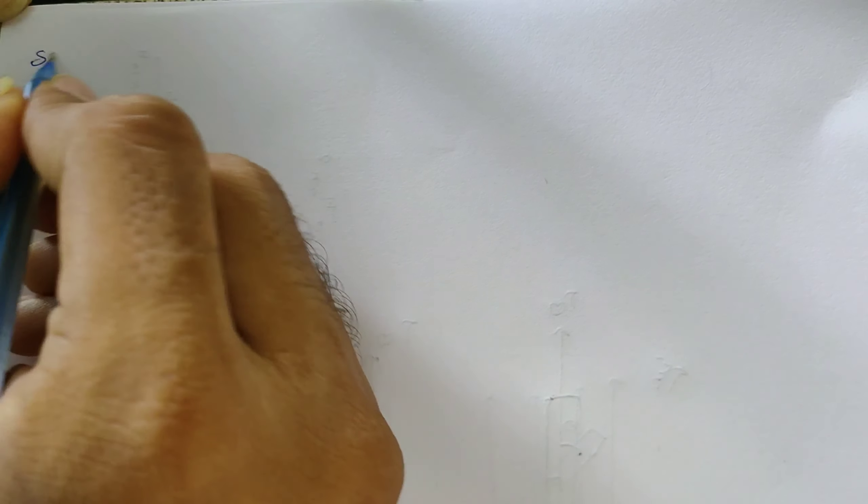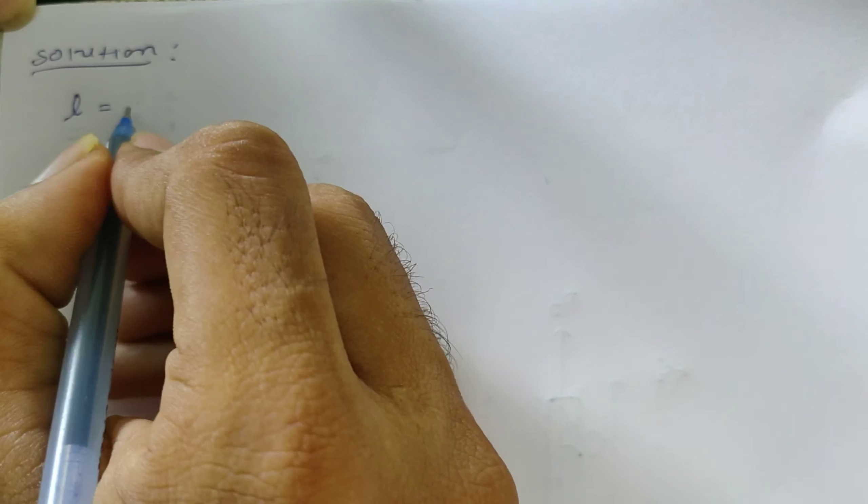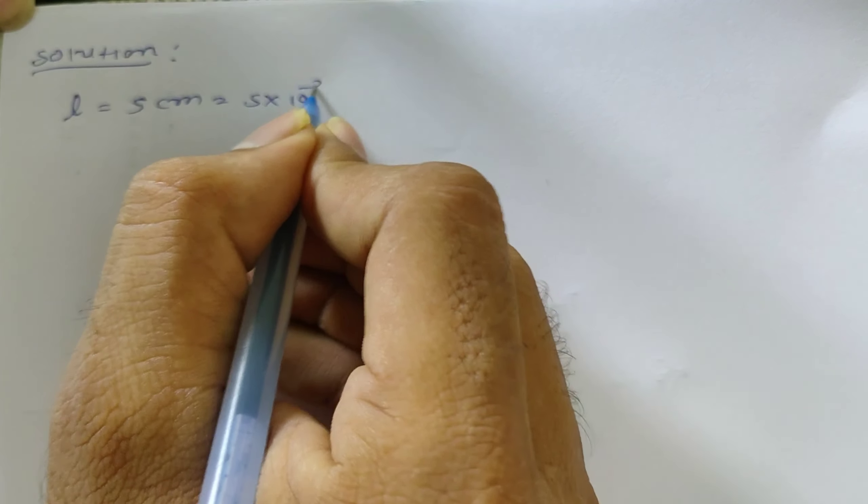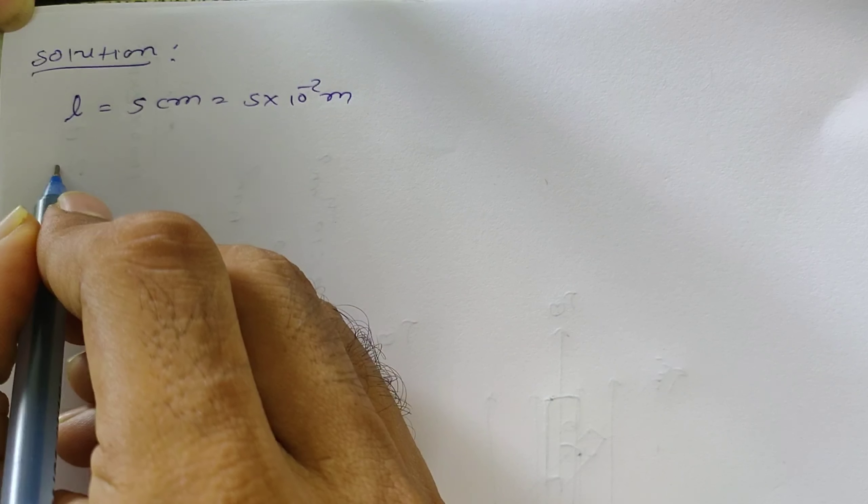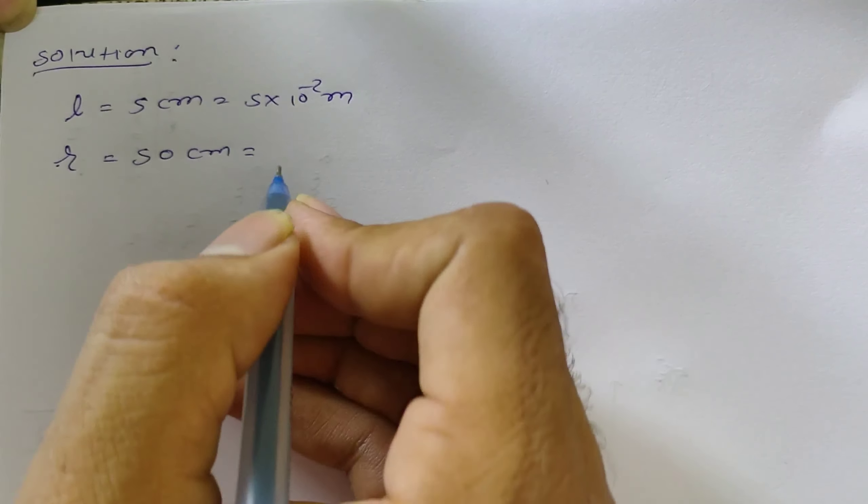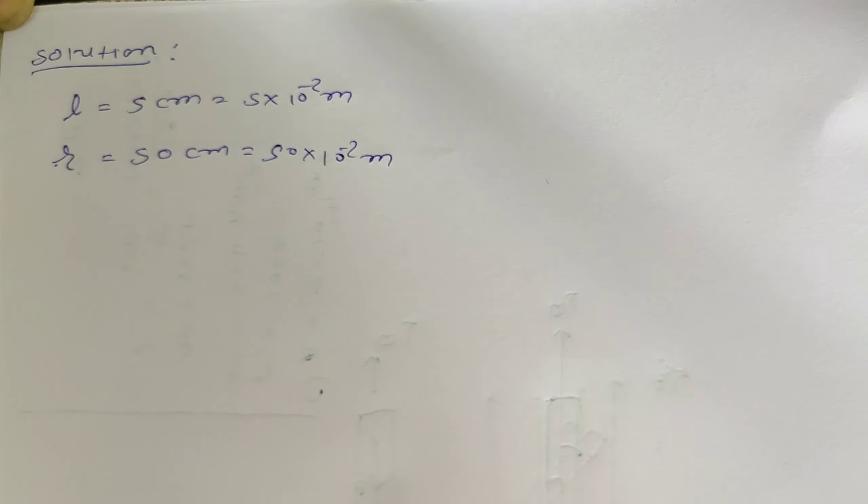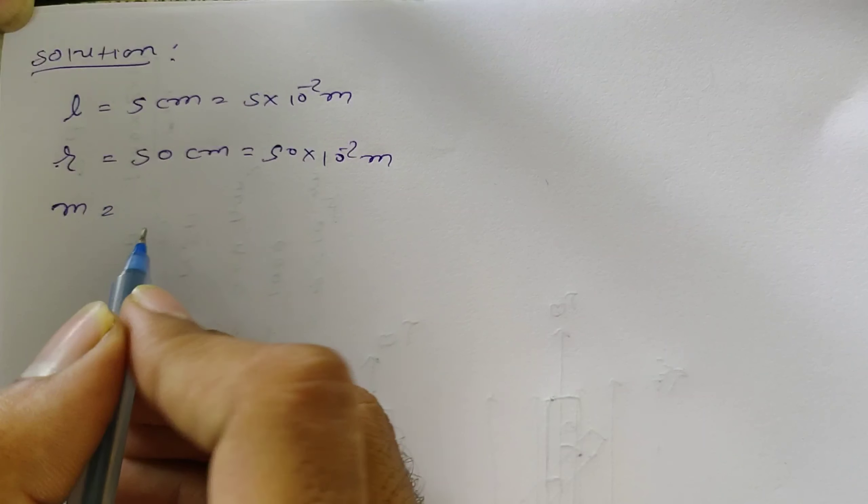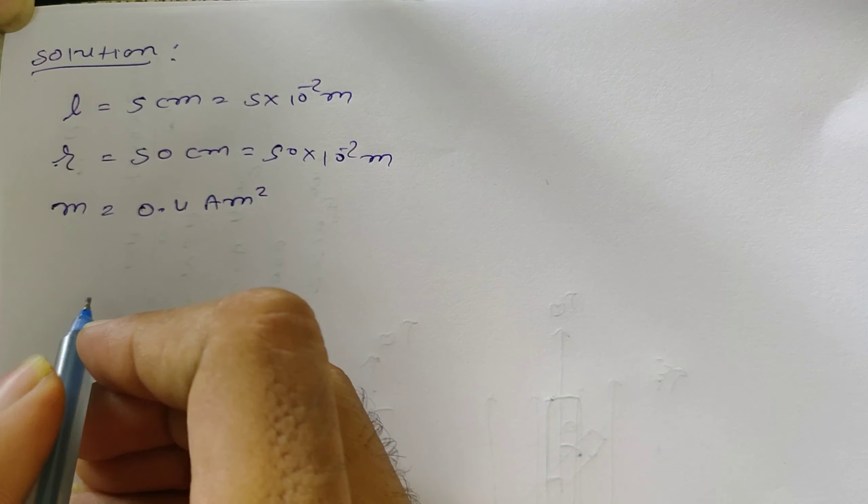In the solution of this problem, the data given is length of bar magnet is 5 cm, so 5×10⁻² m. We have to find magnetic field at a distance 50 cm, so R is equal to 50 cm, so 50×10⁻² m. Then magnetic moment M is equal to 0.4 Am².